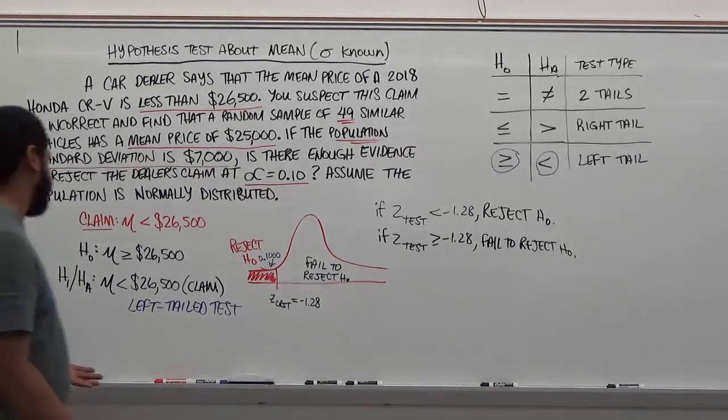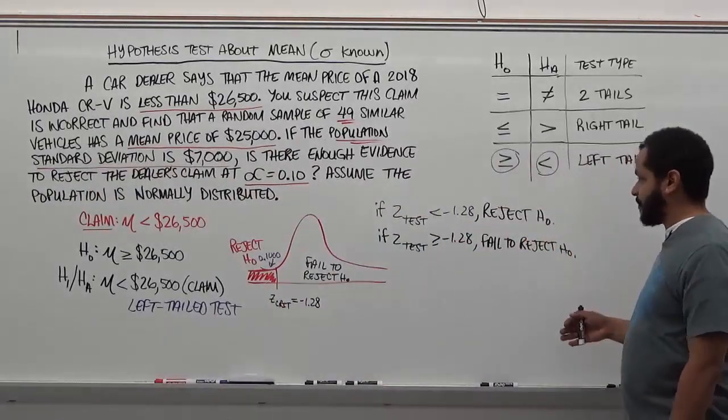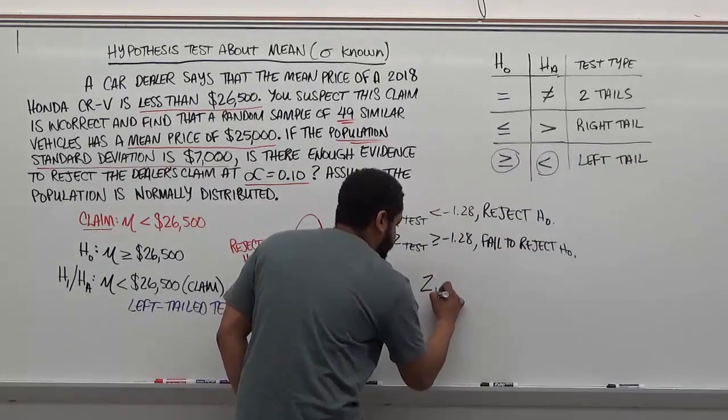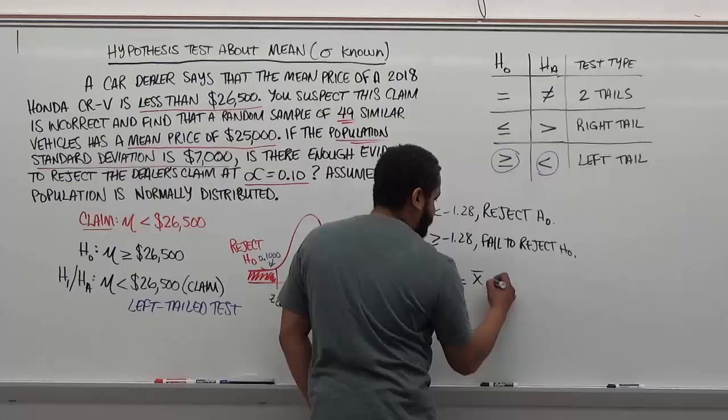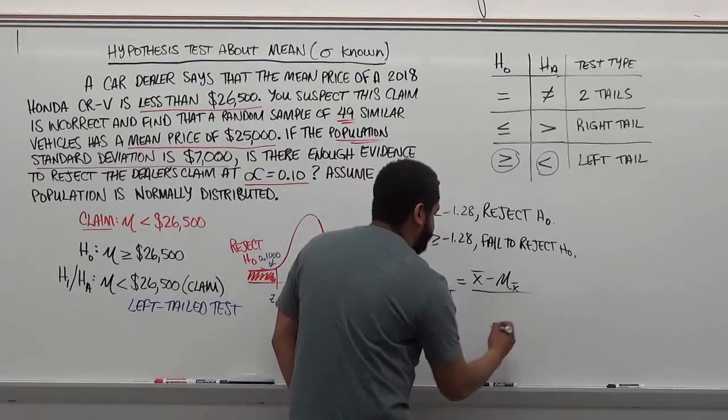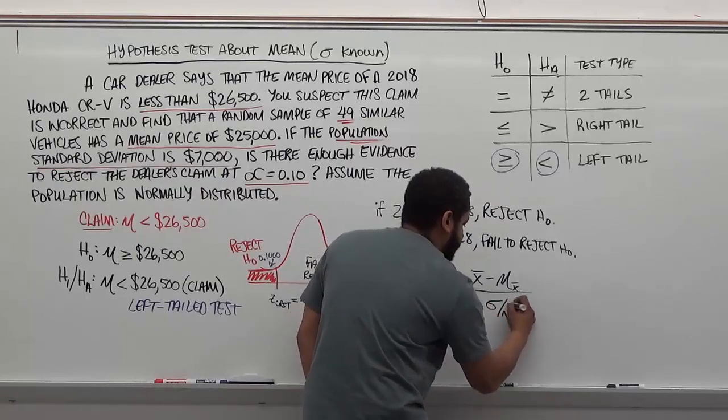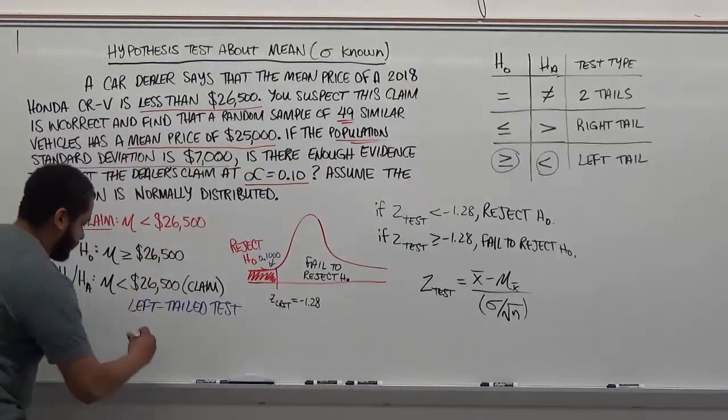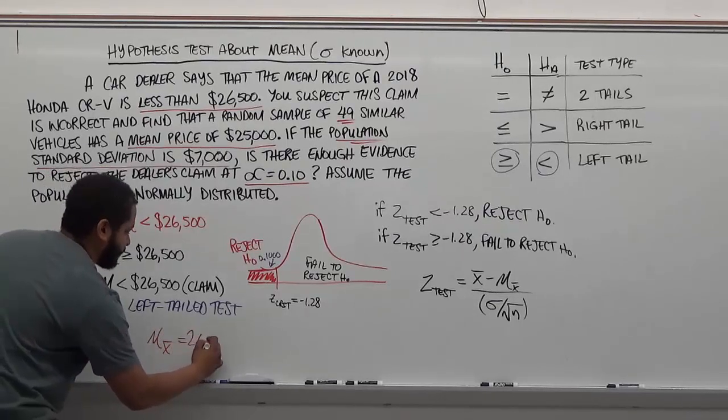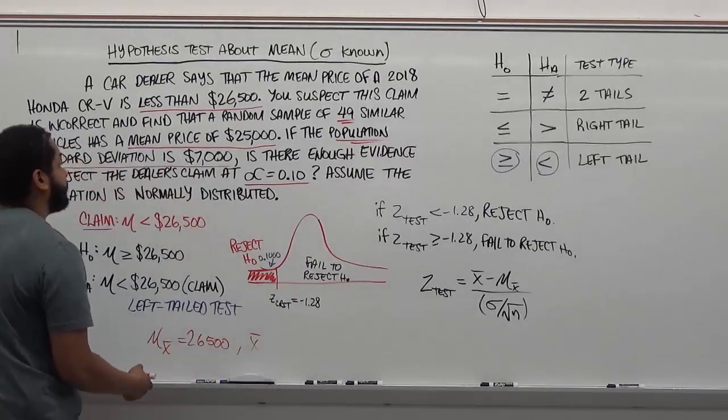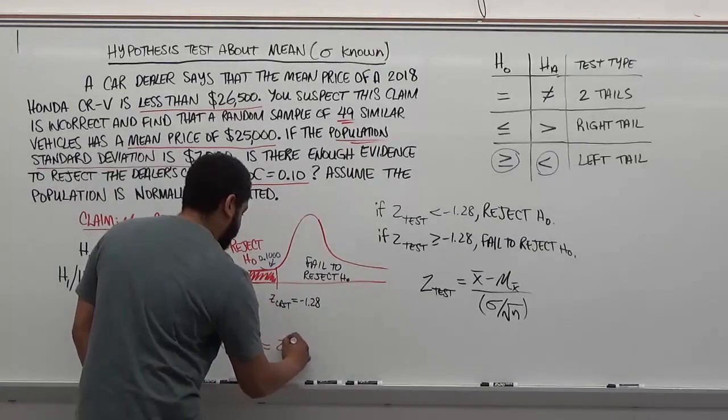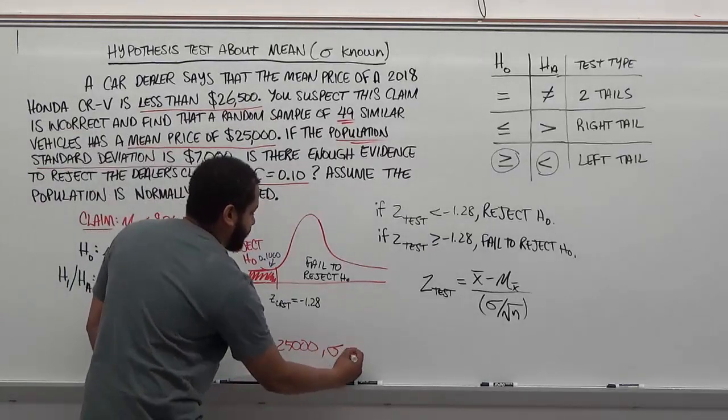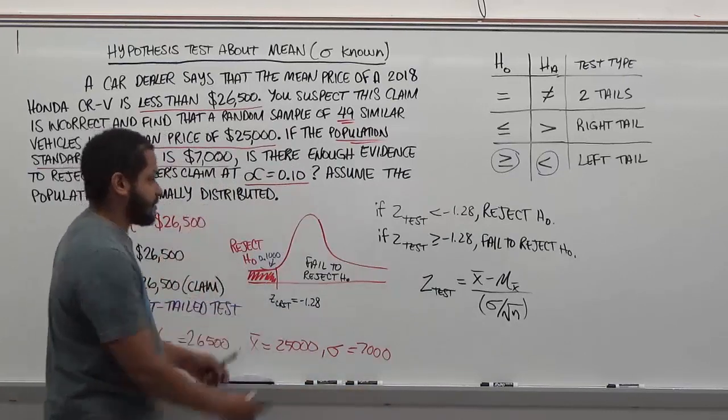These are our conditionals for this hypothesis test, which will make it easier once we get to our test statistic. Let's calculate our test statistic. We use the test statistic formula, which takes the sample mean, subtracts the mean of the population, and divides by the standard deviation over the square root of n. Let's note everything we know. The mean of the sampling distribution is 26,500. The sample mean is 25,000. The standard deviation of the population sigma is 7,000. And n is 49.